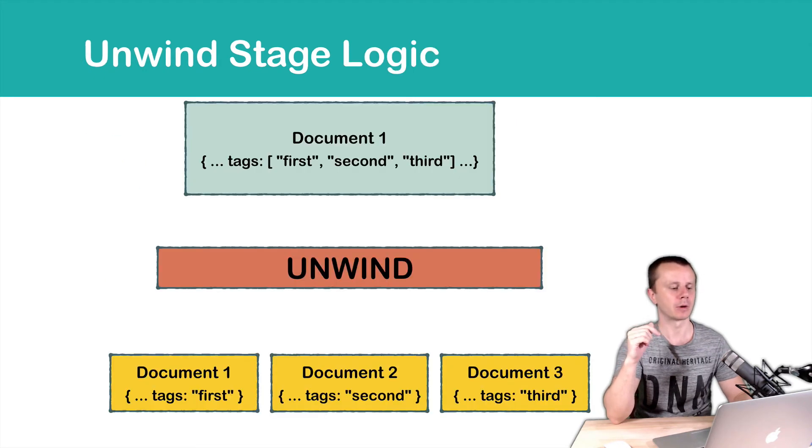Let's look at a diagram. Here it is. On this diagram, we have one document as an input, and this document contains tags array. And there are three strings in this tags array, first, second, and third.